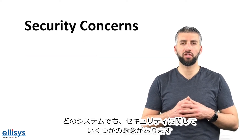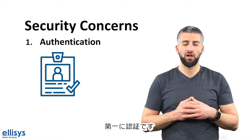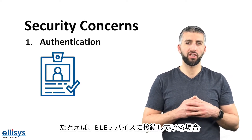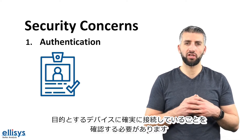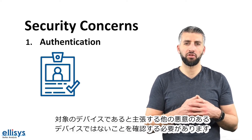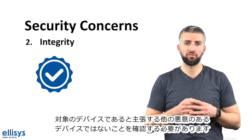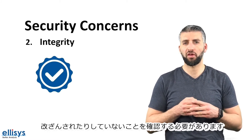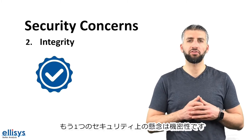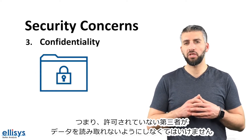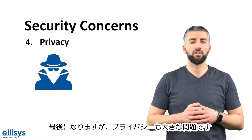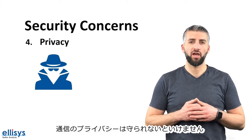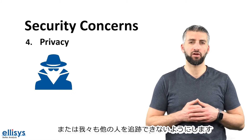There are a few concerns regarding security in any system. First, authentication — proof that the other side is in fact who they claim they are. For example, if you're connecting to a BLE device, you want to be sure you're actually connecting to the device of interest and not some malicious party. The second concern is integrity, which ensures that data received is free from corruption and tampering by unauthorized devices. Another concern is confidentiality, meaning data is not readable by unauthorized parties. Last but not least, privacy — concerned with how private the communication is and the inability for others to track us and our devices.